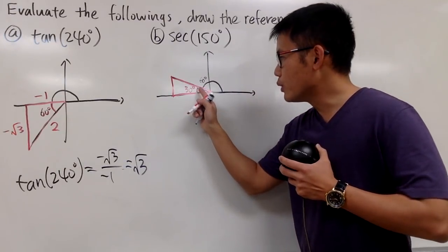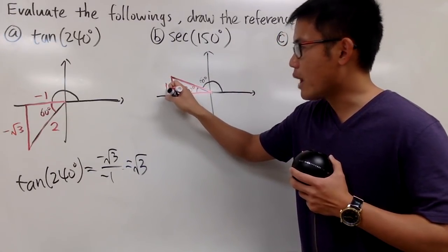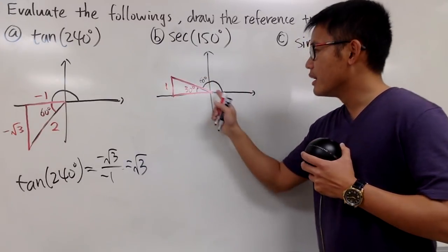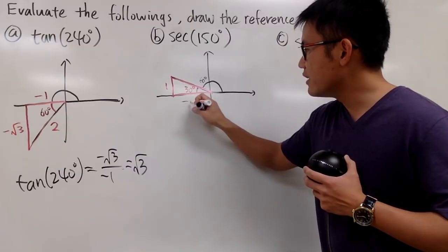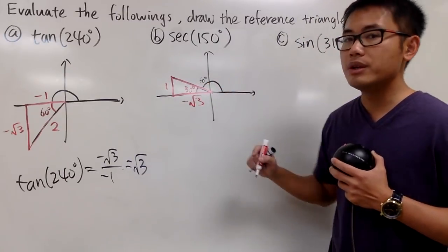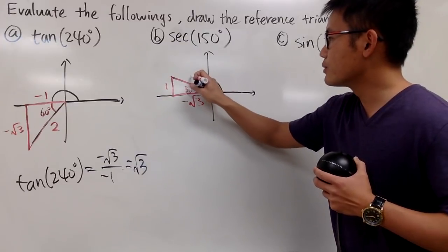Okay, so when you go away from 30 degrees, this right here will be 1. But this is above the x-axis, so it stays positive 1. This side is negative square root of 3 now, because that's away from the 60 degree. And this is still 2.